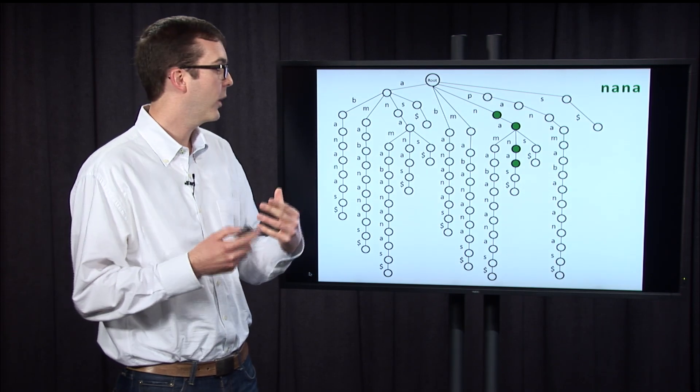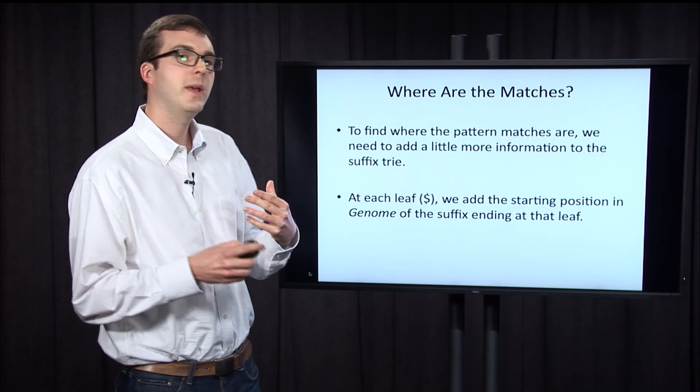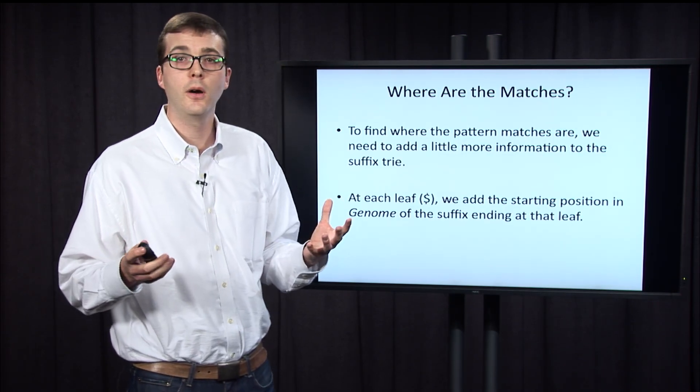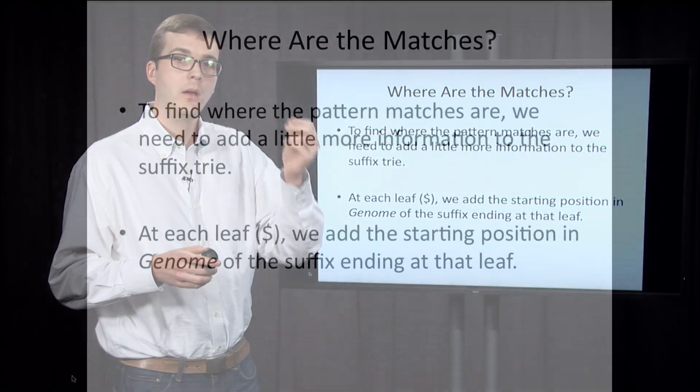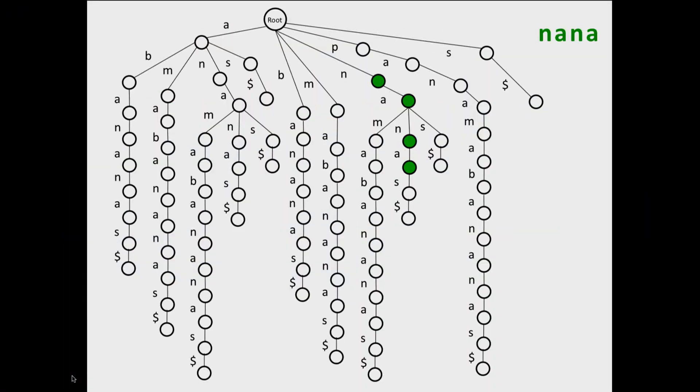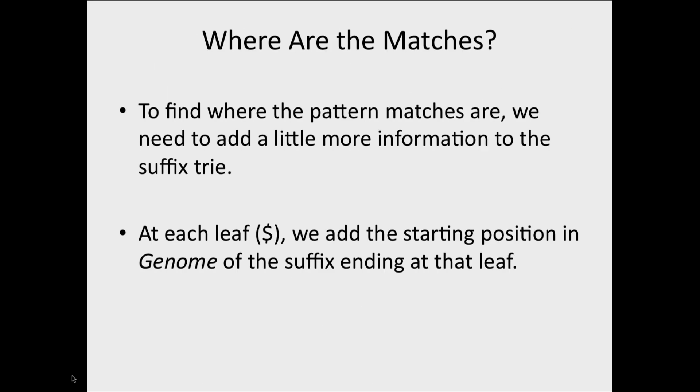So you see that the suffix trie is working for us, but the question would be then, where is it that these matches are? We're able to identify that if you go back to nana, we're able to say it occurs in the string. But this does not presently give us any information about where that match occurred in the string.